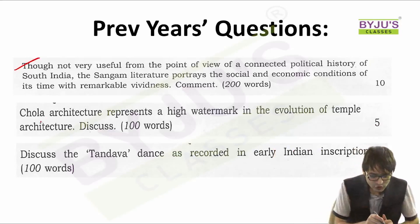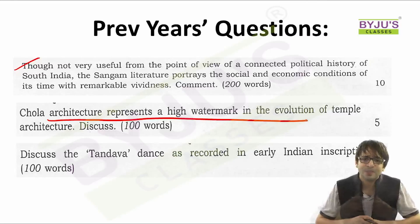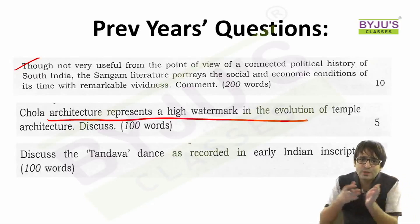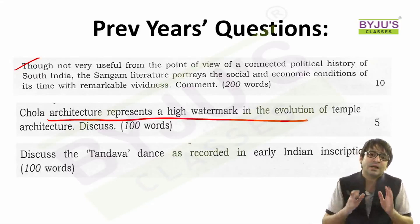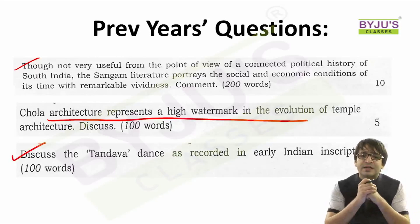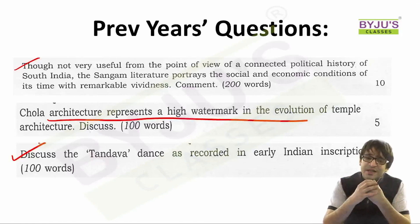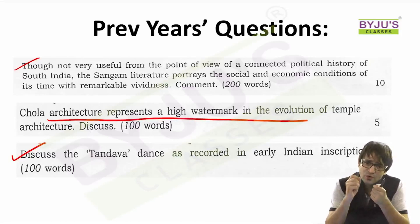Another question: 'Chola architecture represents a high watermark in the evolution of temple architecture.' We have different types of temple architectures — Dravidian style, North Indian style. You have to look at the distinguishing features of one temple architecture versus another, and also the similarities. Another question: 'Discuss the Tandav dance as recorded in early India's inscriptions.' So if you look at these questions carefully, the entire focus is on dance forms, temple architecture, and literature.